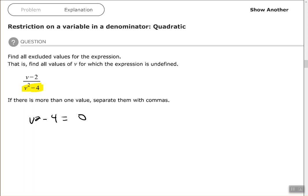We have v squared minus 4. That's the difference of two perfect squares that factors out to be a plus b times a minus b. So v squared minus 4 factors out to be v plus 2 times v minus 2.